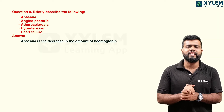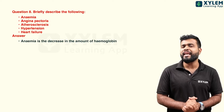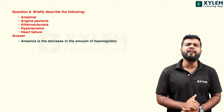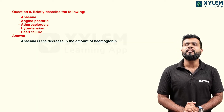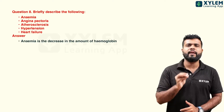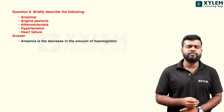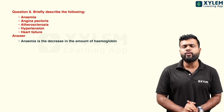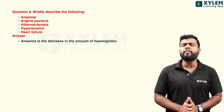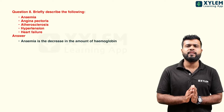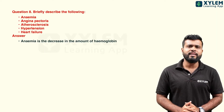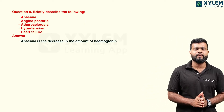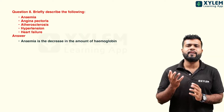Angina pectoris involves reduced blood supply to the heart muscles, causing chest pain. In blood vessels, cholesterol, fat, and calcium deposit to form a clot — that is atherosclerosis. Deposition in blood vessels and chest pain leads to hypertension. When blood cannot be pumped properly from the heart, it results in heart failure.